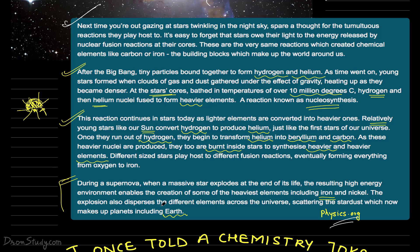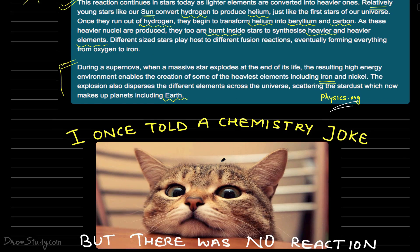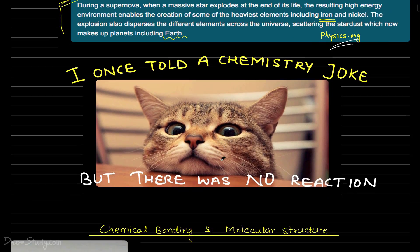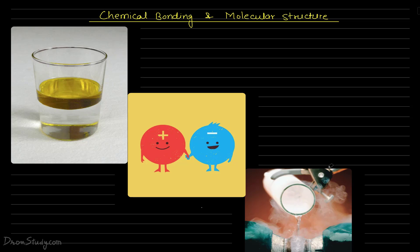Next, let us take a lighter note — how about a joke? I once told a chemistry joke and the reaction was like this. Starting with chemical bonding and molecular structure — the benefit of studying chemical bonding: first, you score good marks in your board exams; second, you score good marks in your JEE or NEET exams. But the long-term benefit is understanding the properties and structures of anything requires understanding chemical bonding.